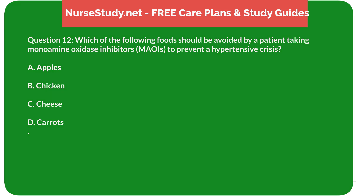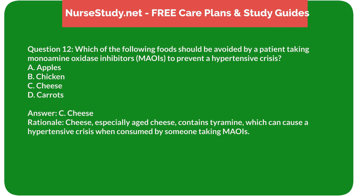Question 12: Which of the following foods should be avoided by a patient taking monoamine oxidase inhibitors (MAOIs) to prevent a hypertensive crisis? A) Apples, B) Chicken, C) Cheese, D) Carrots. Answer: C, Cheese. Rationale: Cheese, especially aged cheese, contains tyramine, which can cause a hypertensive crisis when consumed by someone taking MAOIs.